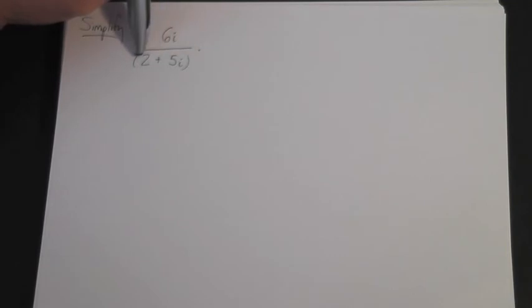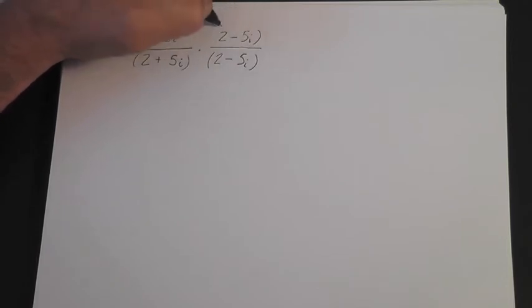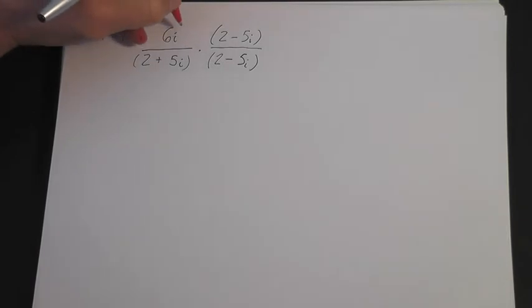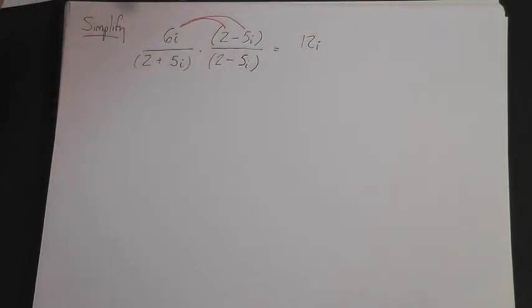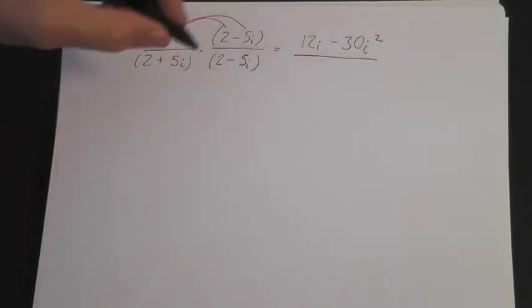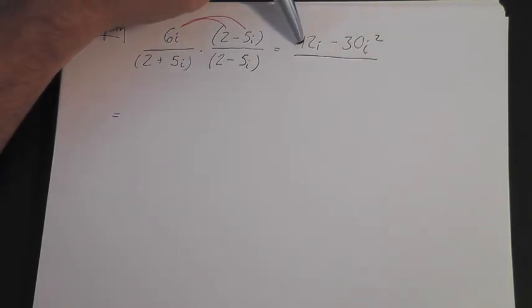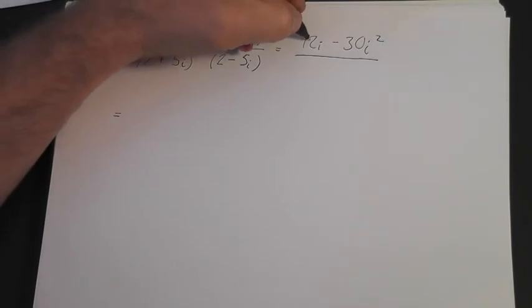Let's look at another example: simplify 6i over 2 plus 5i. The first thing we need to do is find the complex conjugate of 2 plus 5i, which is 2 minus 5i. We multiply both the top and bottom by 2 minus 5i. Distributing 6i across the numerator: 6i times 2 is 12i, and 6i times minus 5i is minus 30i squared. So the numerator is 12i minus 30i squared.